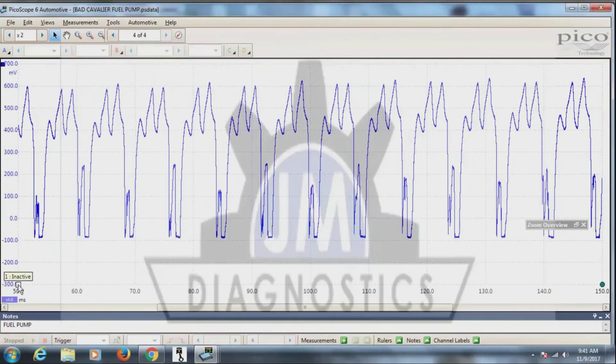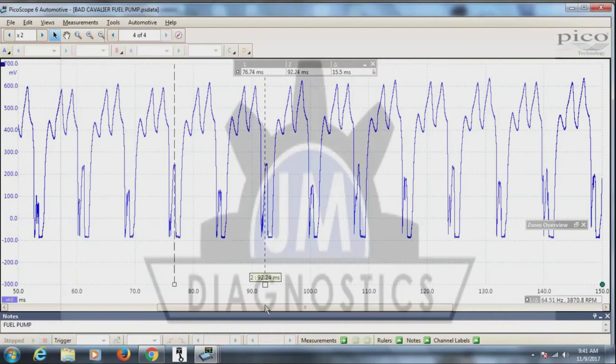What you want to do is you take this cursor, put it on one spot on the pattern, and then go to the next repeating part right there. And over here in the right-hand corner, it'll tell you the RPM that that fuel pump is spinning.